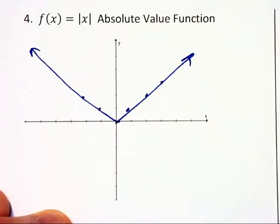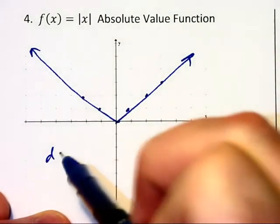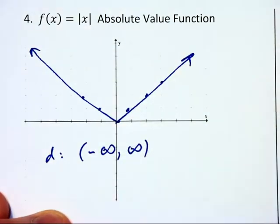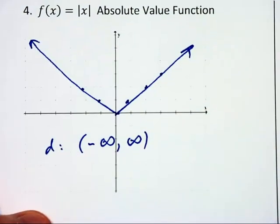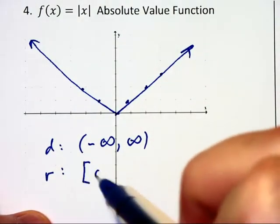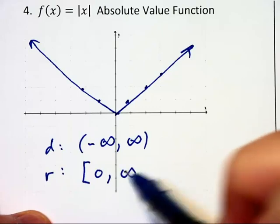What is its domain? Well, it extends forever to the left and the right so its domain is all real numbers. And its range can only be 0 and above so the range will be 0 which we include to positive infinity.